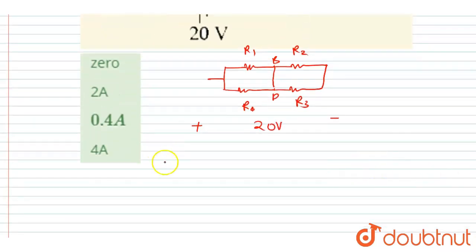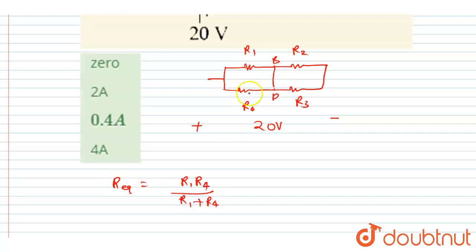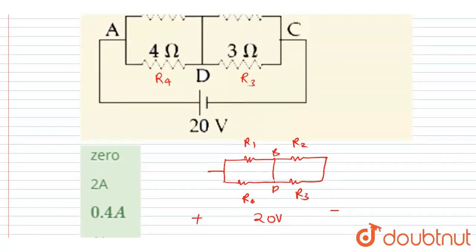Let's calculate the equivalent resistance. R_equivalent of the system will be R1·R4 divided by R1 plus R4, since R1 and R4 are connected in parallel. Now R2 and R3 are also in parallel, so I will write R2·R3 divided by R2 plus R3.